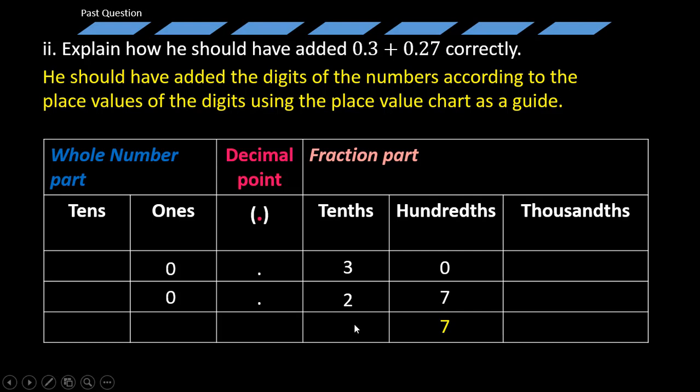Then, 3 plus 2, that would give you what? 5. Then, you introduce your point. And then, of course, 0 plus 0 would have just given you 0. So, we can simply conclude that 0.3 plus 0.27 is simply equal to 0.57. This is how Edison could have simply done it.